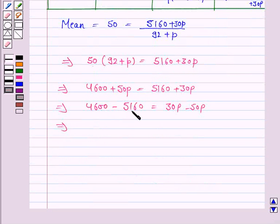Now 4600 minus 5160 is minus 560 minus 20P. So this implies 560 is equal to 20P.